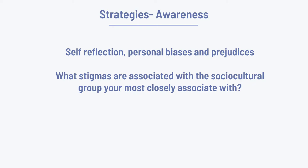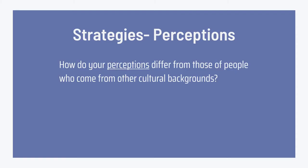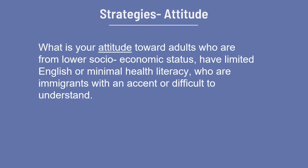What are some strategies? First, we can look within ourselves and examine our own social cultural group to see what stigmas we've been ingrained with — a little self-reflection on our own personal biases and prejudices. We need to think about how our own perceptions differ from those of people from other cultural backgrounds, and recognize that we've been pre-programmed. We need to think about our own attitudes toward adults who might come from a lower socioeconomic status, who have limited English or minimal health literacy, or who are immigrants with an accent or who are difficult to understand.